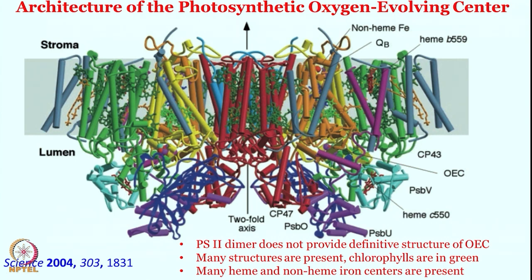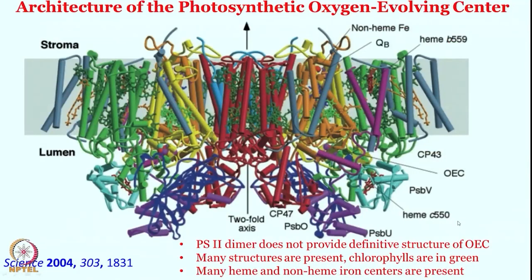This photosystem II dimer structure exists, but it does not still provide the definitive structure of the OEC. This crystal structure is phenomenal and highly informative, but it cannot give you the resolution at the level an inorganic chemist would like. Many different iron centers — heme iron, non-heme iron — are present. Despite the presence of these many different centers, it still cannot give a clear idea about what is happening at these metal centers and what are the exact associations of these metal centers.